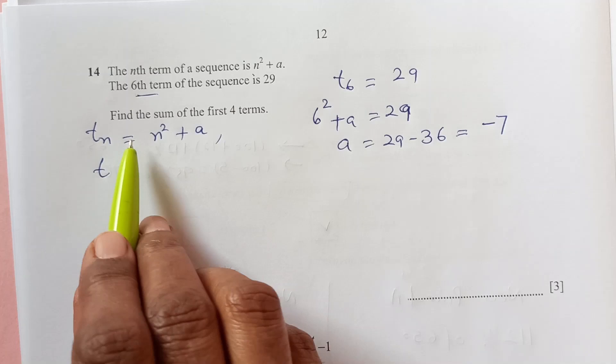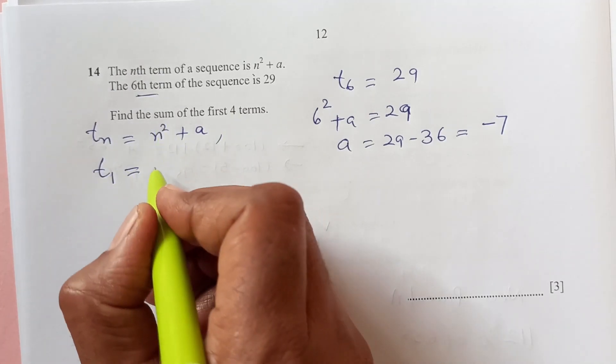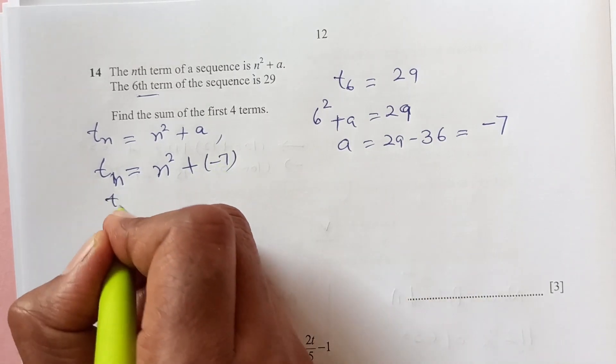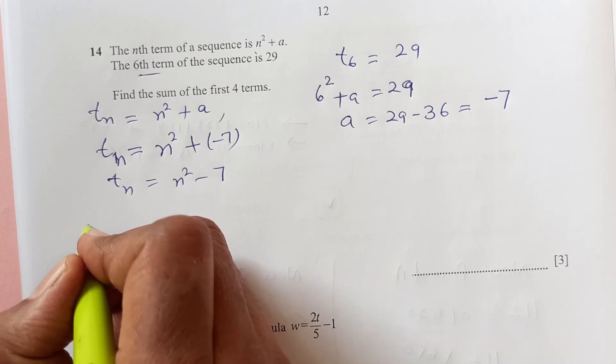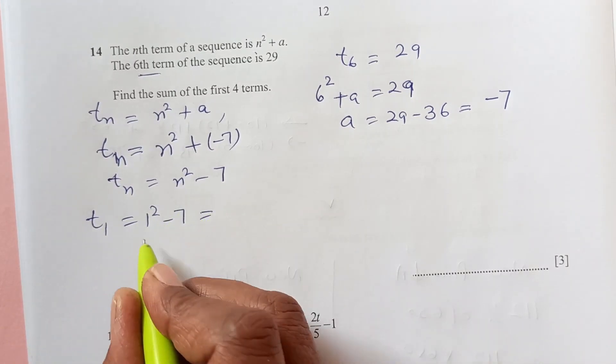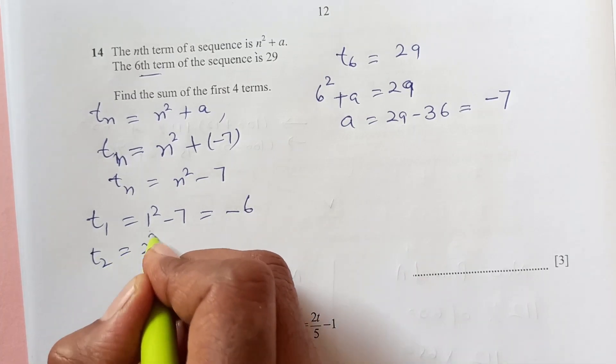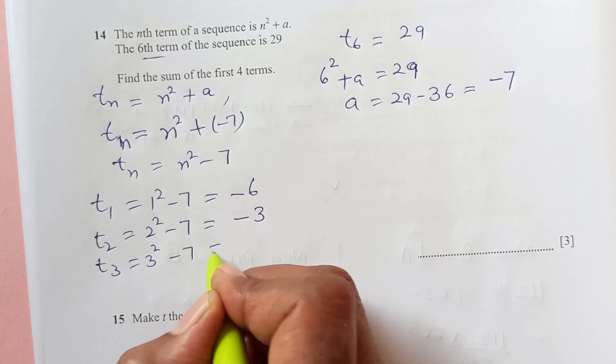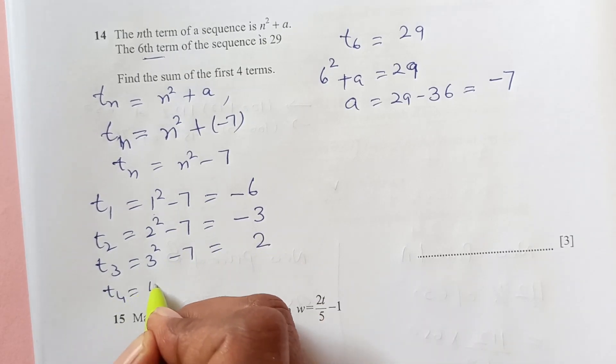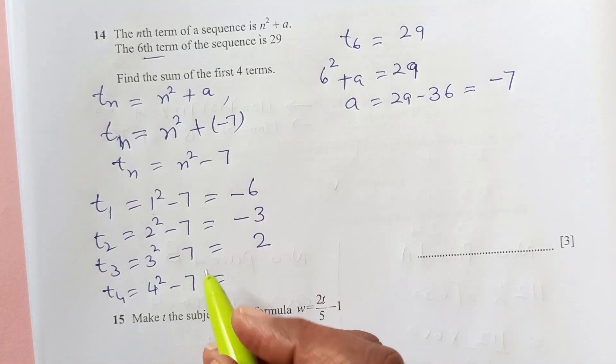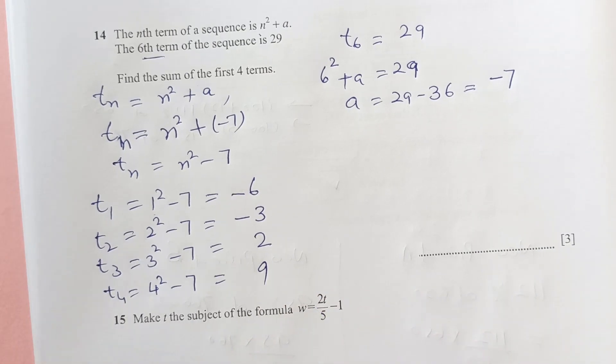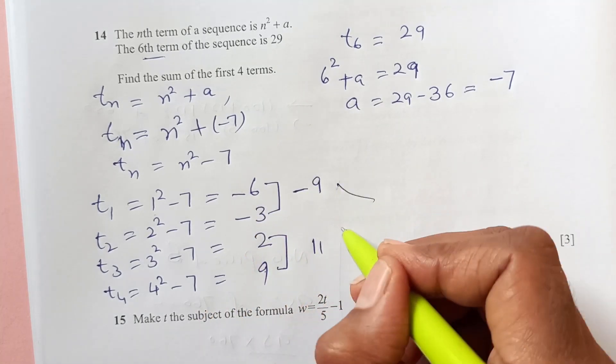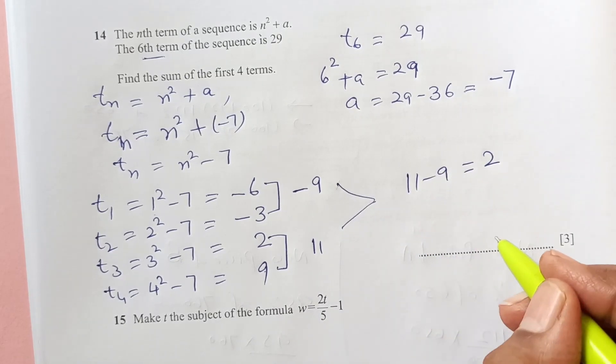Now the question is find the sum of first four terms. Tn is going to be n squared plus A is negative 7. So that means Tn is n squared minus 7. Now we can find out T1. T1 is 1 squared minus 7, that is negative 6. T2 is 2 squared minus 7, that is 4 minus 7, negative 3. T3 is 3 squared minus 7, 9 minus 7 is 2. And T4 is 4 squared minus 7, 16 minus 7 is 9. So now we are looking for the sum. We will first add positive terms. This is negative 9 and this is 11. So now we are going to subtract that, 11 minus 9, that is 2. So final answer is 2.